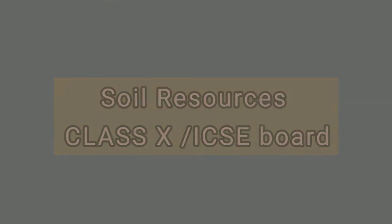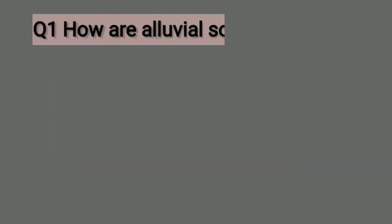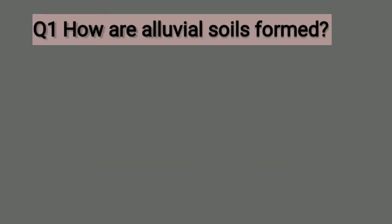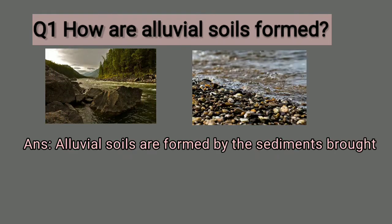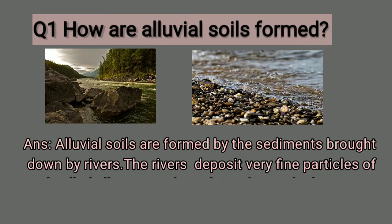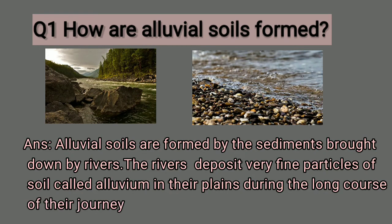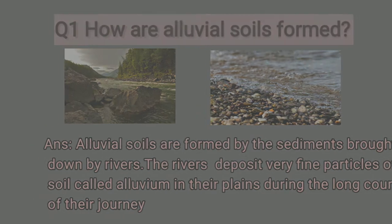First question: How are alluvial soils formed? Alluvial soils are formed by the sediments brought down by rivers. The rivers deposit very fine particles of soil called alluvium in their plains during the long course of their journey.